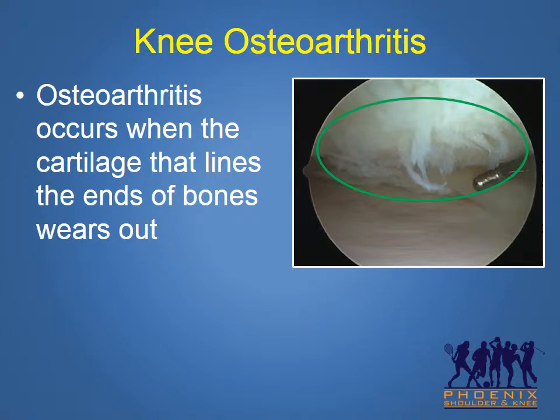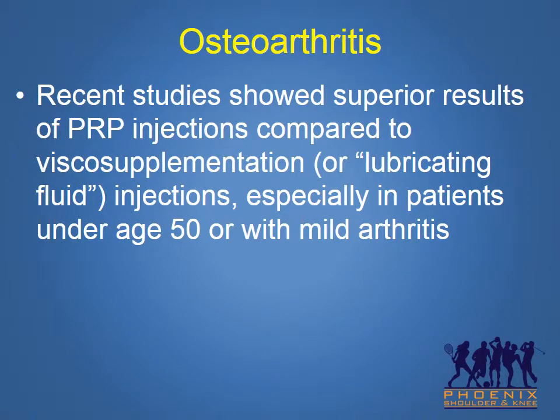Osteoarthritis occurs when the cartilage that lines the ends of bones wears out. The image on the right shows the arthroscopic appearance of worn-out frayed cartilage involving the bottom part of the thigh bone in the knee joint. Severe osteoarthritis of the knee often requires knee replacement surgery, but treatments for mild to moderate osteoarthritis include steroid or visco-supplementation injections, also known as lubricating fluid injections. Recent studies show superior results of PRP injections compared to visco-supplementation or lubricating fluid injections, especially in patients under age 50 or with mild arthritis.